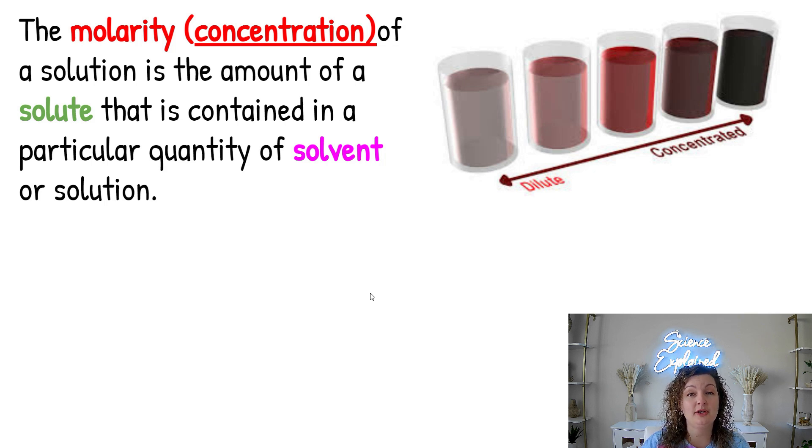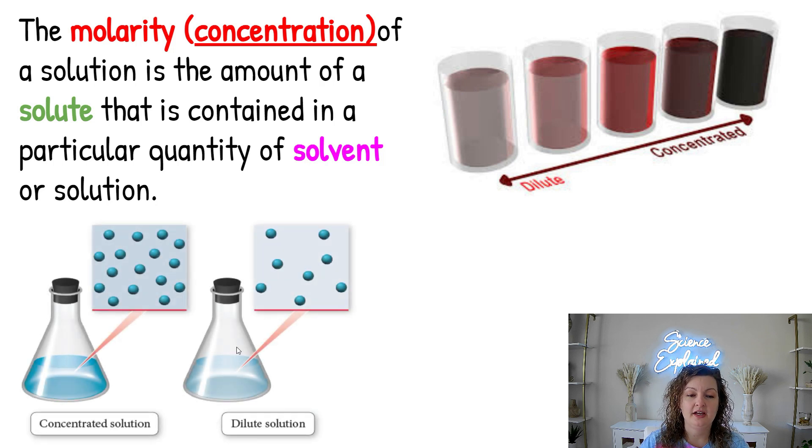It's how much solute you're putting in per how much solvent. So if you only put in a little bit of solute in your solvent, we can say that's diluted as shown right here. It's going to be weak. Another way of looking at this is on a molecular level, and you can see that there is not a whole lot of solute going on in this flask, so we can say it's diluted or low molarity.